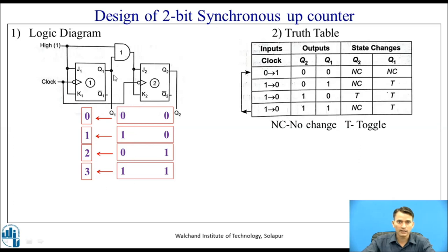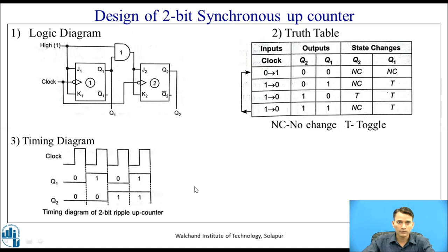Now let us consider the last state where Q1 and Q2 are both 1. When the next clock pulse is given, since Q1 is 1, the value 1,1 is given to J2, making Q2 transition from 1 to 0. The first flip-flop is already in toggle mode so it also transitions from 1 to 0, and the cycle repeats. This can be observed in the timing diagram: first clock transitions 00 to 01, second clock 01 to 10, third clock 10 to 11, and then the cycle repeats.